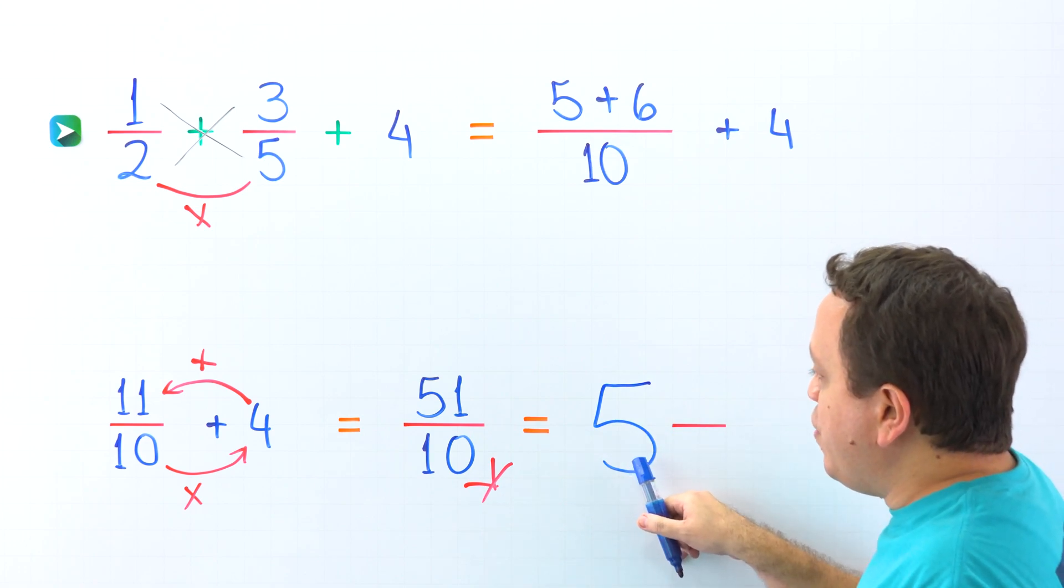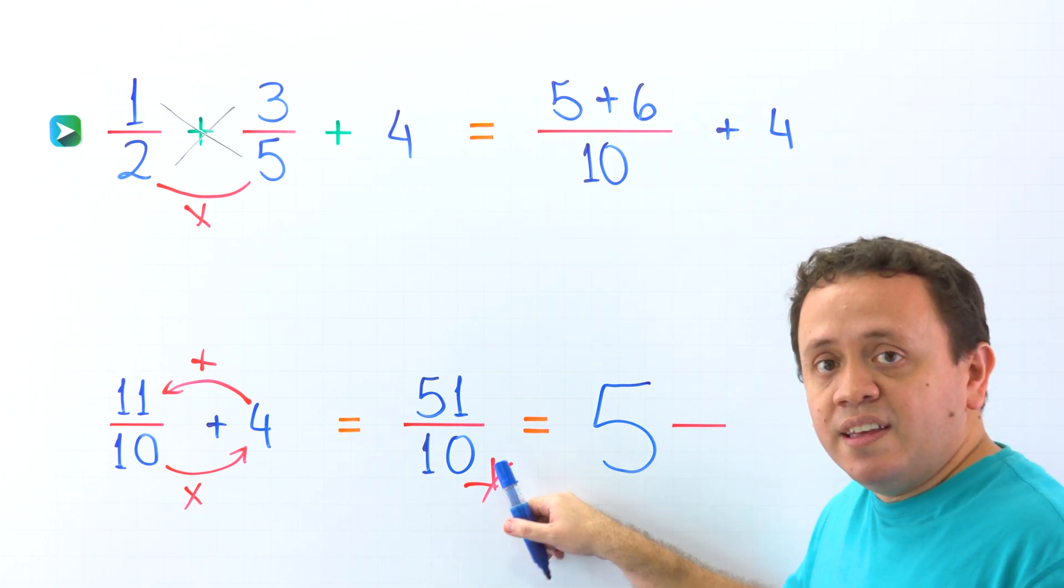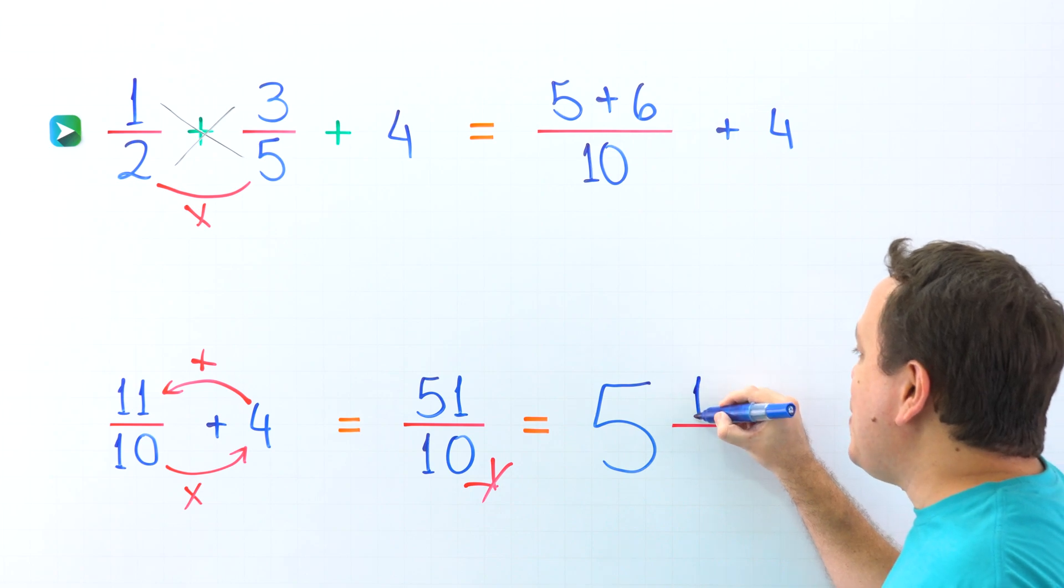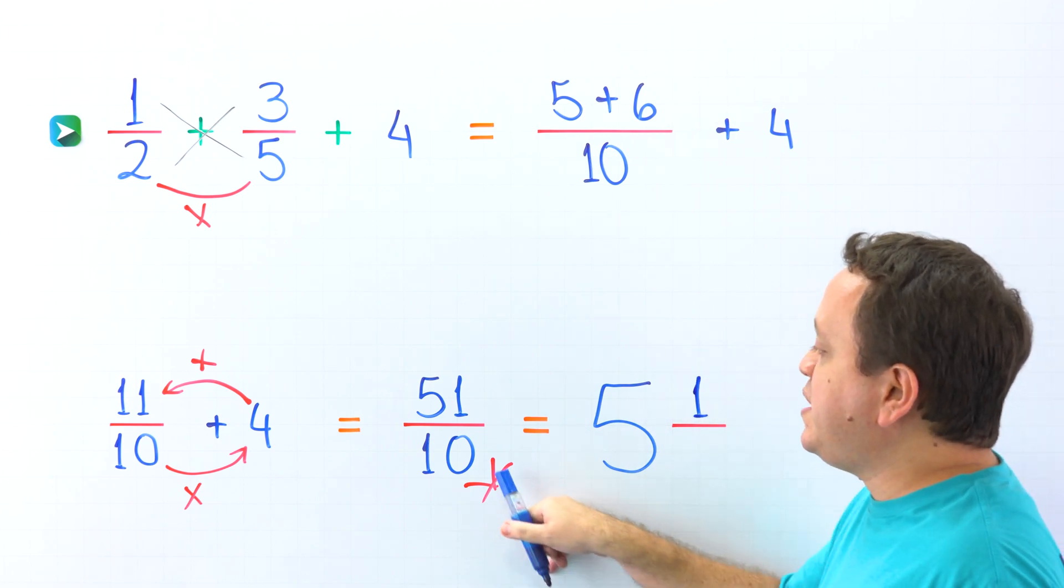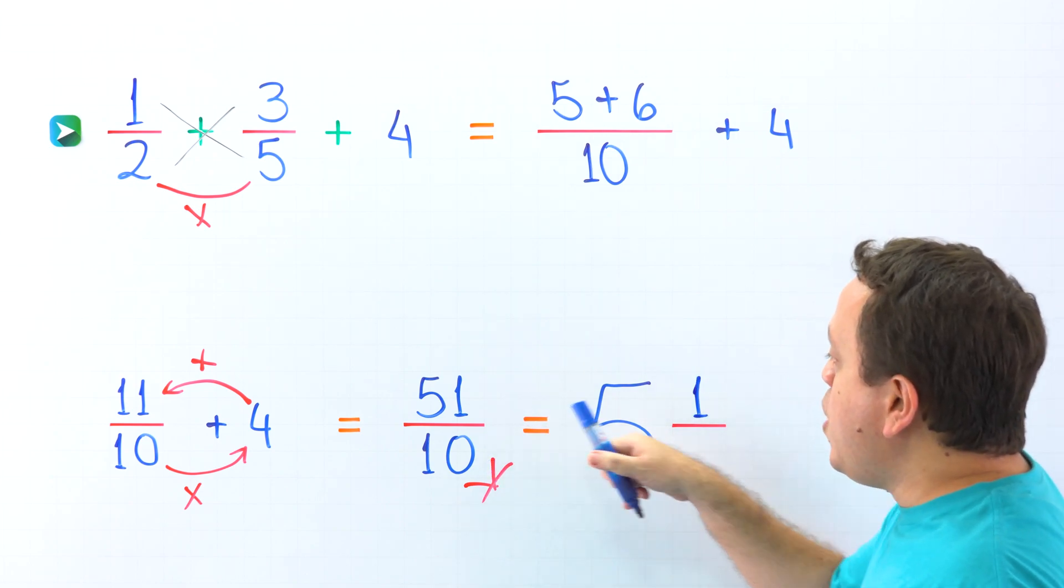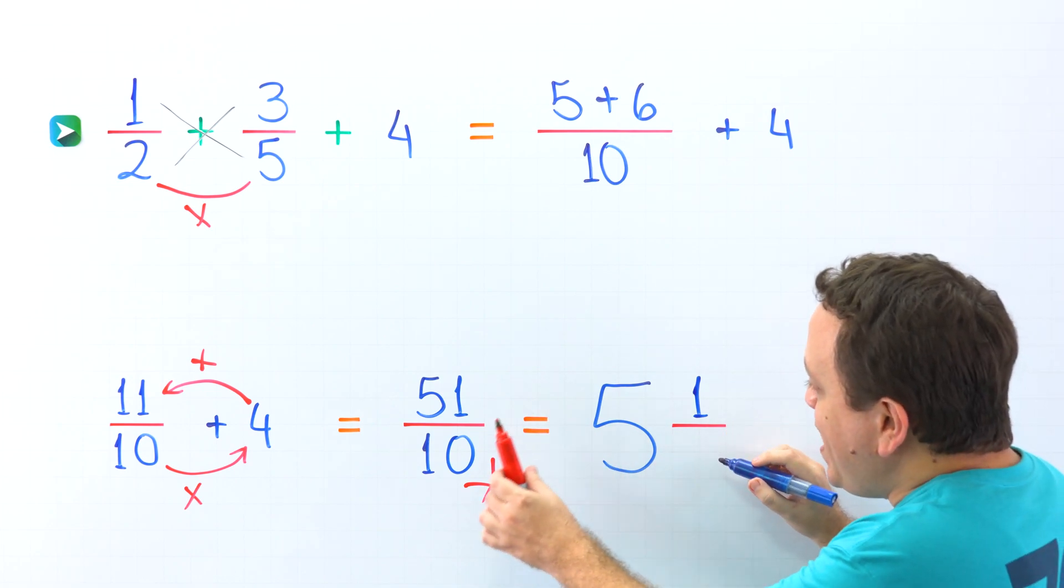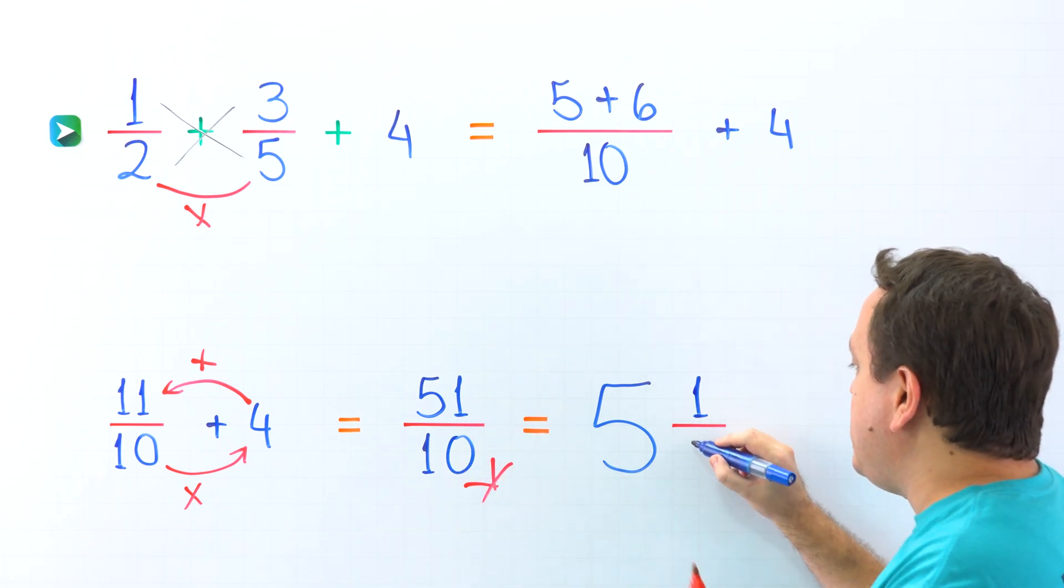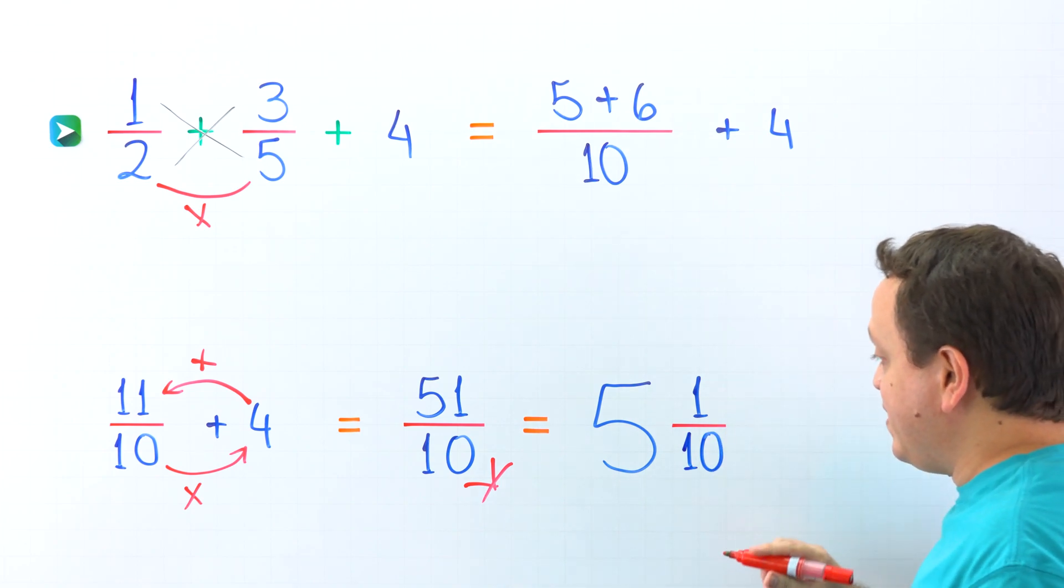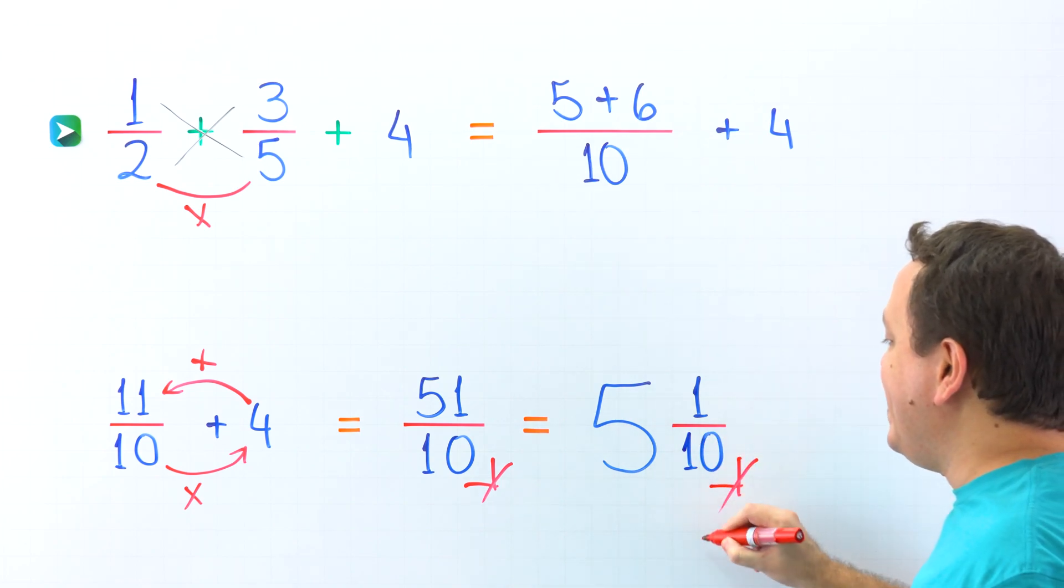Now we multiply. 5 times 10 is 50. To get 51, we need to add 1. Once again, 5 times 10 is 50. To get 51, we need to add 1. Finally, the denominator stays the same. 10 come over here. The answer as a mixed number is 5 and 1 tenth.